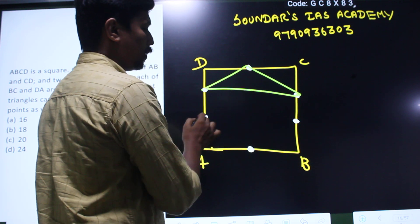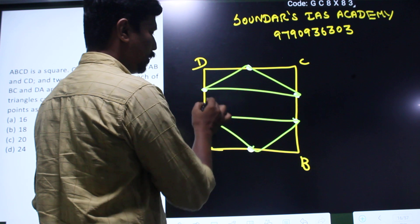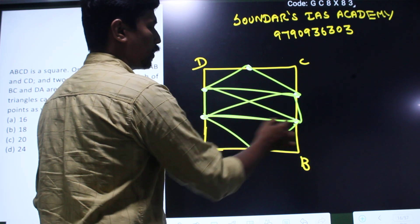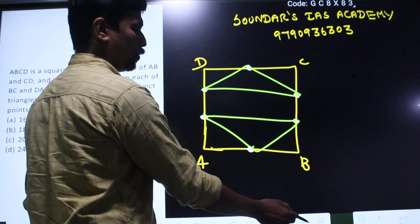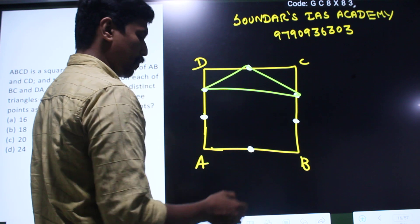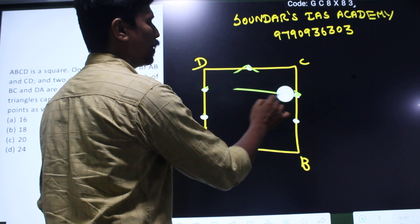you can see the three points. So we can form many triangles. Maximum, every triangle form. So you can see how many triangles are formed.